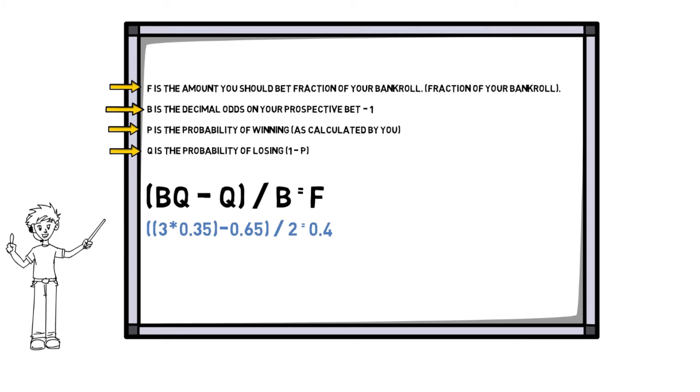Another condition of the Kelly Criterion is that it can communicate to you when a bet offers value. Value is a significant concept in sports betting. Basically, you have discovered a value bet when the possibility of it being viable is higher than the suggested possibility of the odds for that bet.